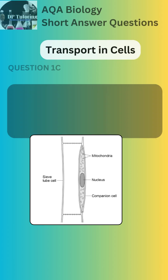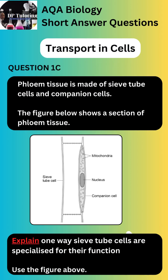Part C of the question states that the phloem comprises a sieve tube and companion cells. AQA asks you to explain one way the sieve tube cells are specialized for their functions. Use the diagram to your advantage. Pause the video and review what are specialized cells before you continue.